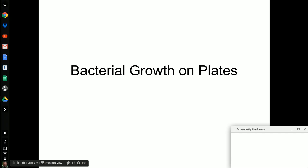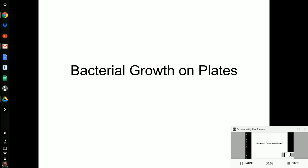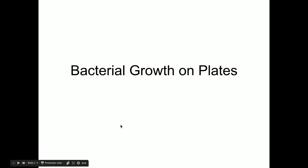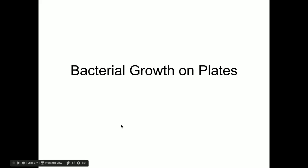This short screencast will deal with the types of bacterial growth on plates. You have a worksheet titled 'Types of Bacterial Growth on Agar Plates.' The left-hand column says 'bacterial lawn,' with fields for visual appearance, description, and what it indicates about the environment. Please complete that as you listen to the screencast.